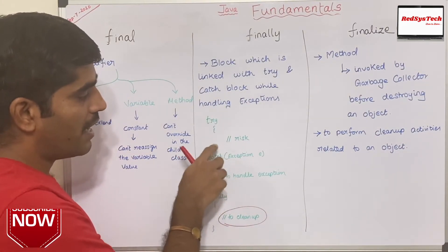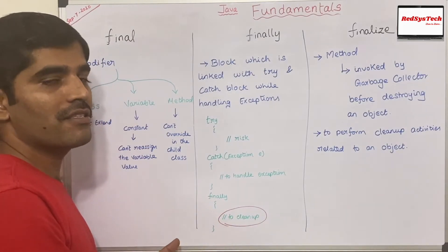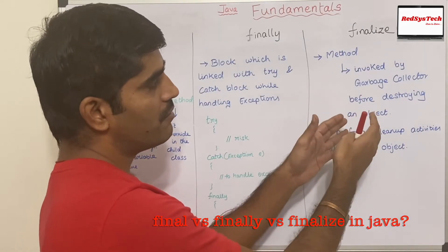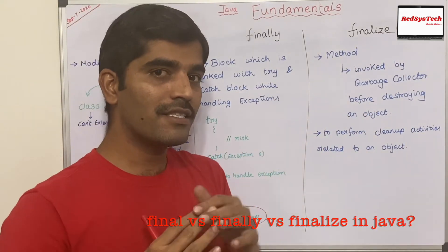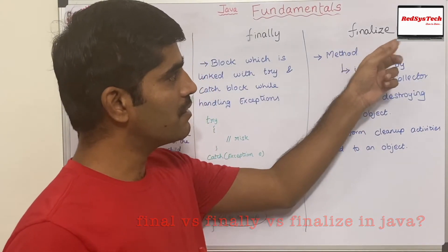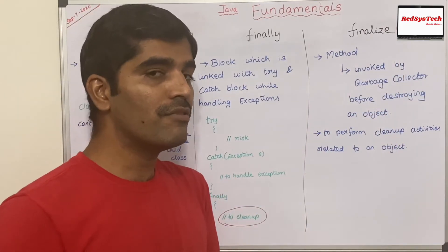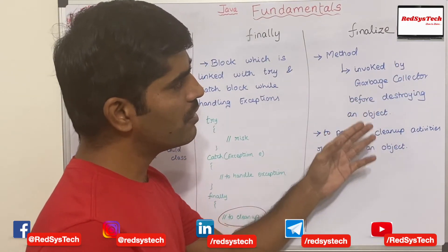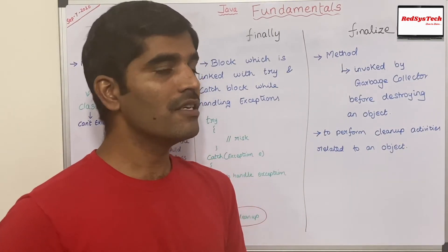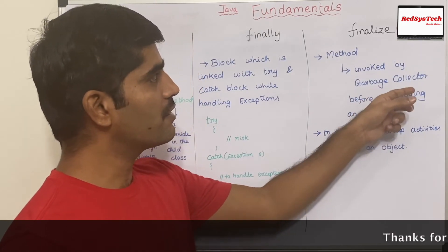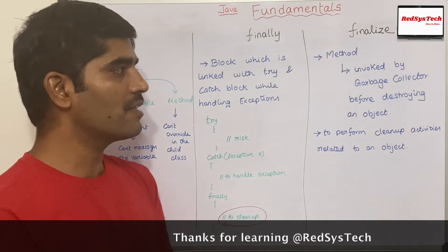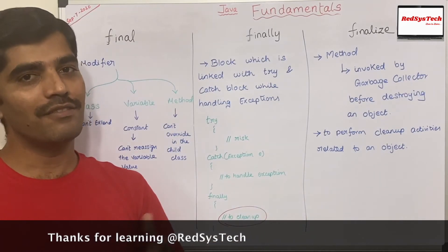Similarly, finally is a block used in the try-catch when handling exceptions — whether the exception is handled or not, if you want to perform important or cleanup activities, you go for the finally block. Then finalize is a method internal to every object — since the Object class is the root of every class in Java, it has this finalize method, which is invoked by the garbage collector before destroying an object to perform cleanup activities.